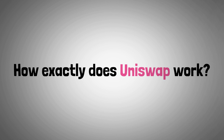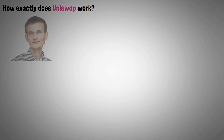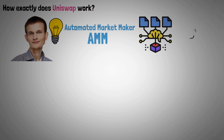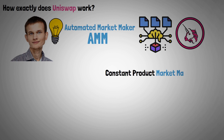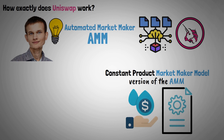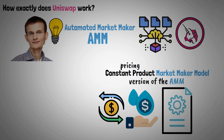Now let's look at how exactly Uniswap works. Vitalik Buterin's concept of the on-chain automated market maker, or AMM, served as the model for the Uniswap protocol. The constant product market maker model, a version of the AMM system that maintains liquidity pools for users to trade against, is the primary pricing mechanism used by Uniswap.